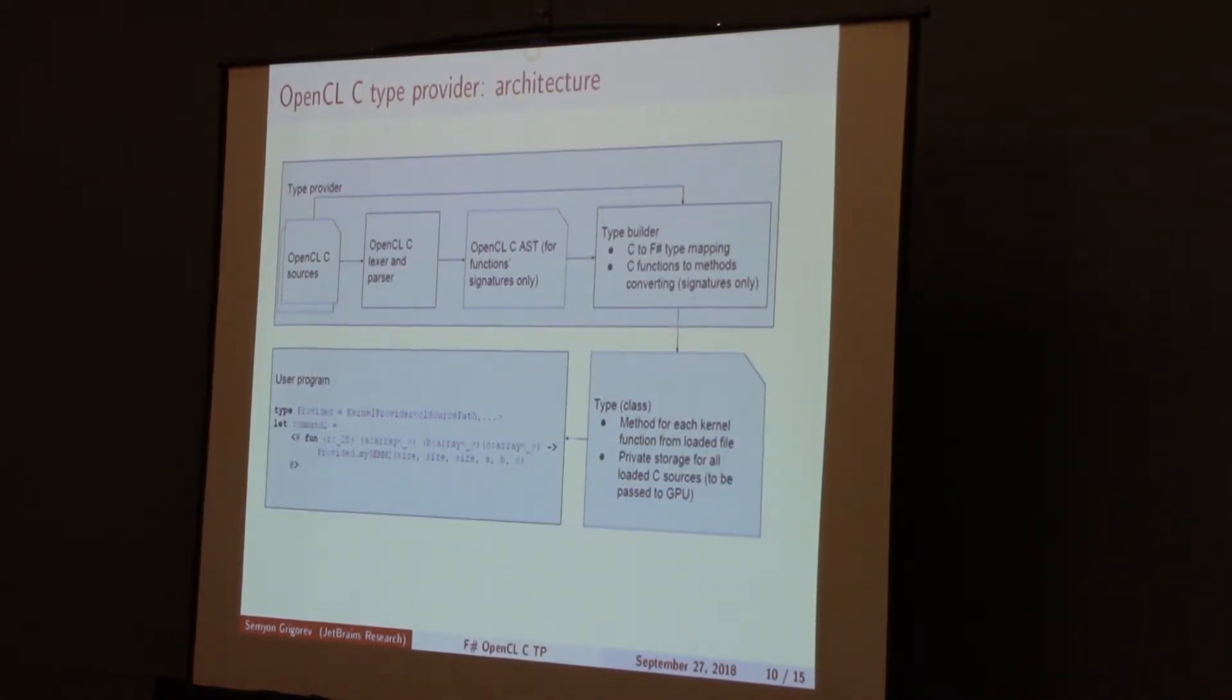Here you can see the internal structure of our type provider. It's just a typical type provider with one technical trick. We save full source code in our type for execution reasons. Because on the F# side, it's enough to provide function signatures just because the user wants to call them. And it's not important how this function is implemented. But when we want to execute this function, of course, we should have the implementation.